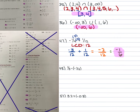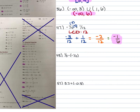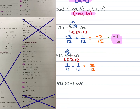For number 48, we have 1/3 minus negative 1/12. The two negatives next to each other turn into a positive. The least common denominator is 12, so multiply 1/3 top and bottom by 4, giving 4/12 plus 1/12, which gives us 5/12.